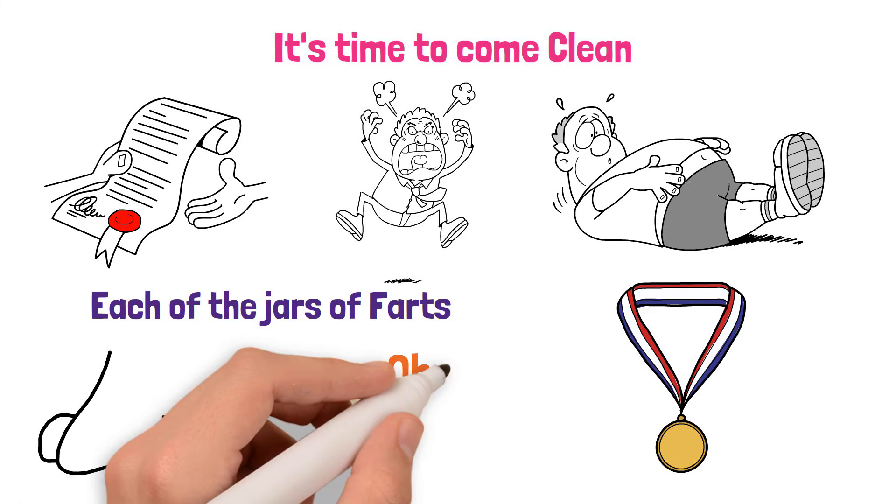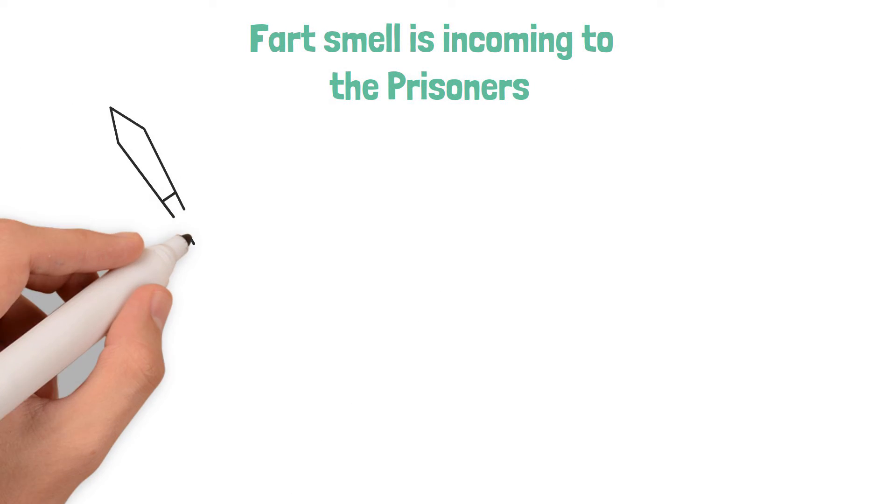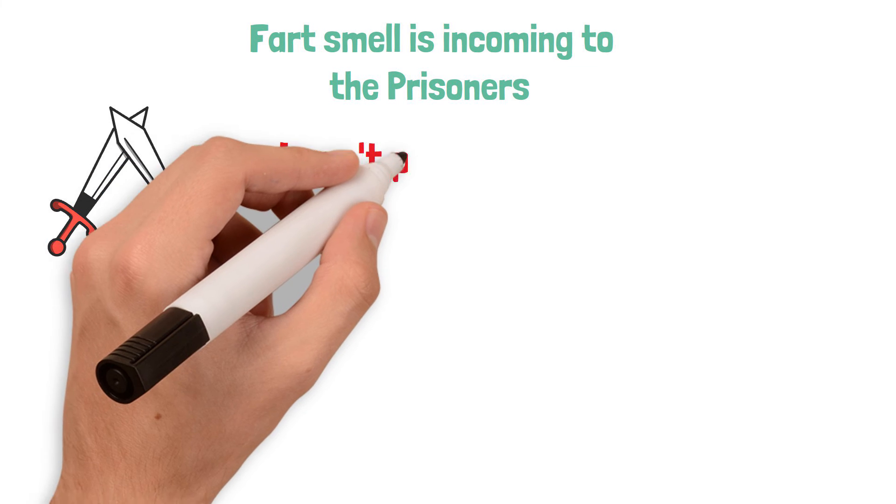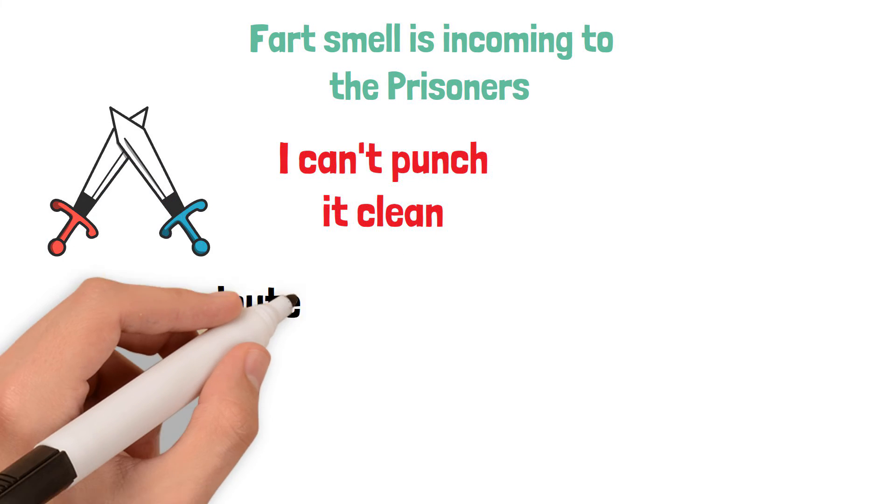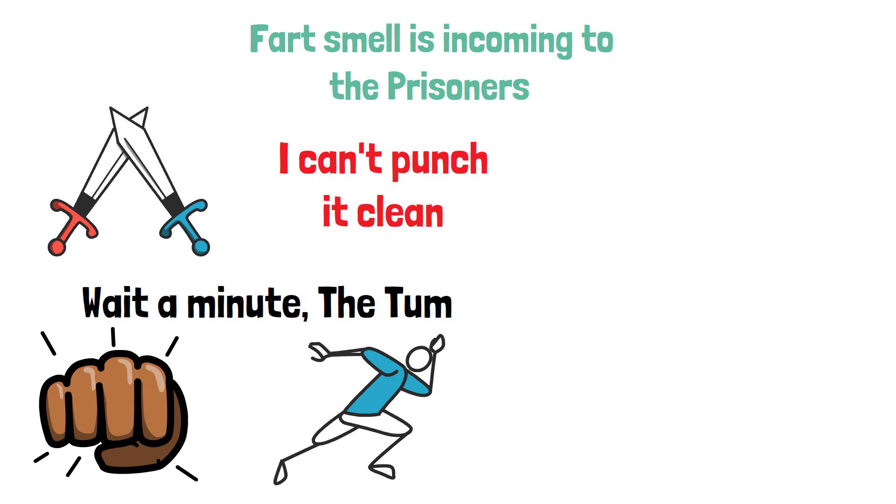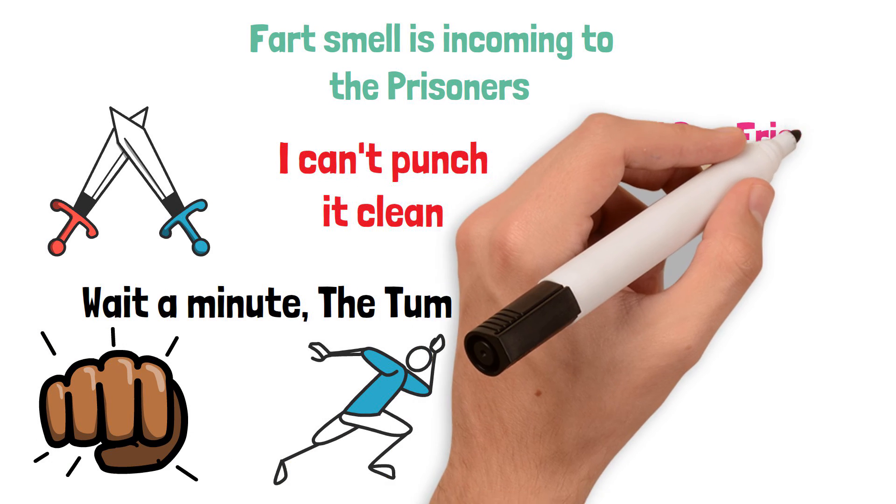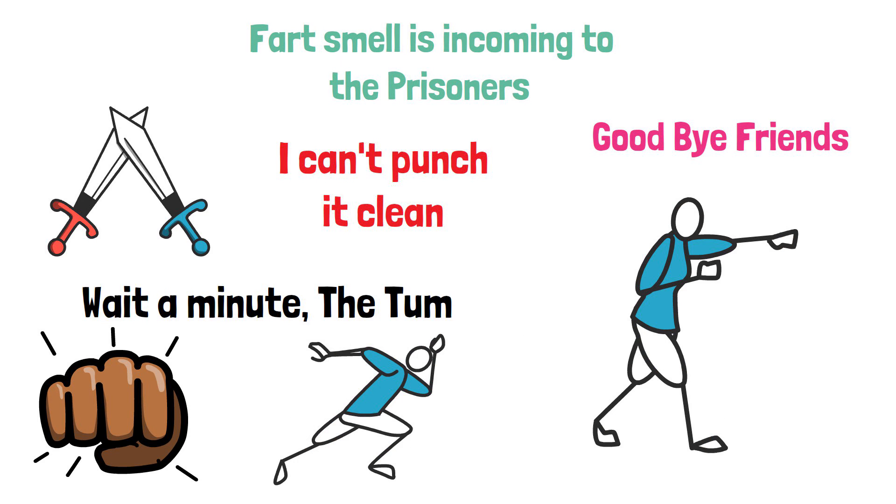Jailer: Oh, a promotion! I love jobs. Fart smell is coming to the prisoners, they are battling to survive out of it. P2: I can't punch it clean, it's too stinky. Hey wait a minute, that's dirty. P2: Oh my god. He then punches the dirt and went underground to escape out of prison. Jailer: Goodbye friends, forgot to write. And so his fist punched through three feet of dirt and came out clean on the other side.